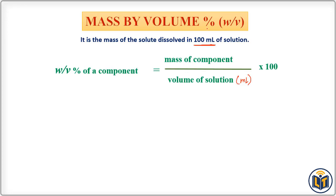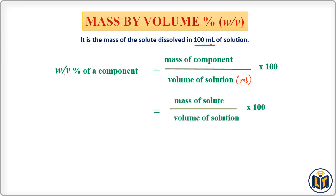In case we have to express mass by volume percent for a solute in a solution, the formula can be given as: mass by volume percent of a solute equals mass of solute divided by volume of solution in ml, multiplied by 100.